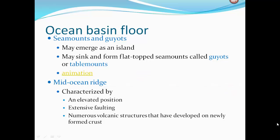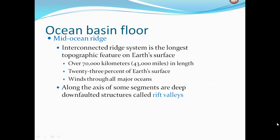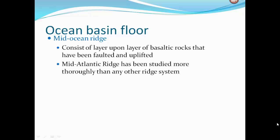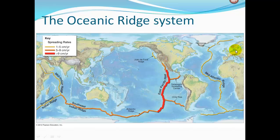A mid-ocean ridge is characterized by an elevated position, extensive faulting, and numerous volcanic structures developed on newly formed crust. The interconnected ridge system is the longest topographic feature on Earth's surface — over 70,000 kilometers in length, comprising 23% of Earth's surface, and winding through all major oceans. Along the axis of some segments are deep, down-faulted structures called rift valleys, consisting of layers of basaltic rock that have been faulted and uplifted. The mid-Atlantic ridge has been studied more thoroughly than any other ridge system. It winds around the entire earth and is named for the region each portion is in — mid-Indian ridge, southwest Indian ridge, southeast Indian ridge, Antarctic ridge, and the East Pacific Rise.